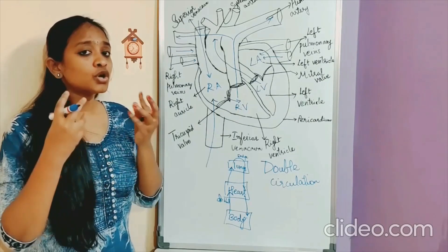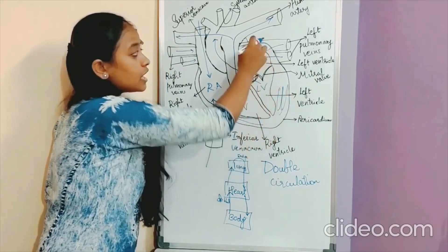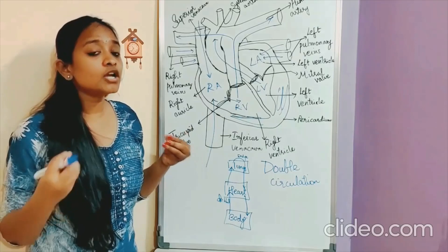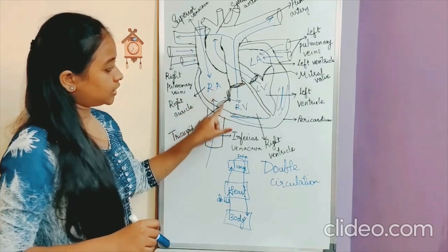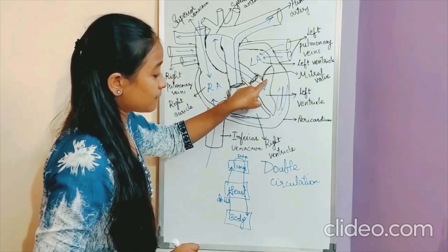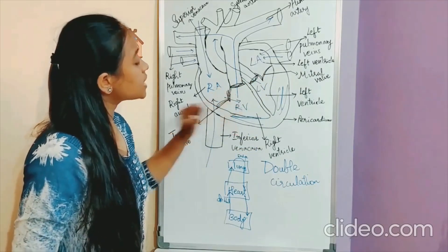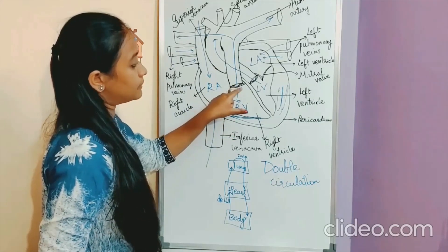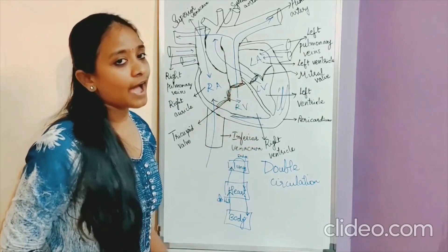Because ventricles have to contract strongly, the walls of the ventricles are thicker compared to the walls of the auricles. And between the ventricles, the left ventricle has a thicker wall because it has to pump blood to all over the body. The valve between the right auricle and right ventricle is called the tricuspid valve. The valve between the left auricle and left ventricle is called the mitral valve or bicuspid valve, because it has two flaps. There is also a valve between the pulmonary artery and the right ventricle called the pulmonary valve, and a valve between the left ventricle and the systemic aorta called the aortic valve.